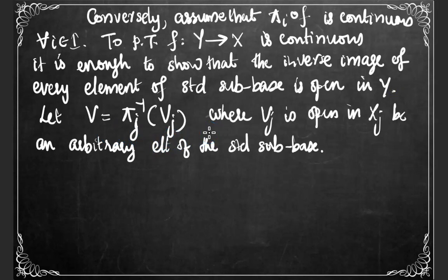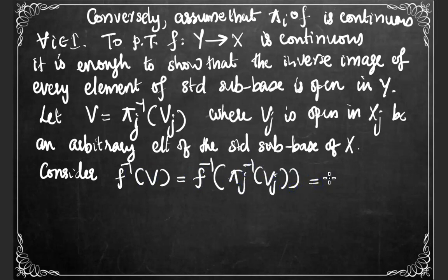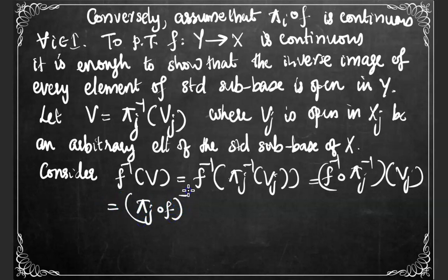Let V equal πⱼ⁻¹(Vⱼ), where Vⱼ is open in the space Xⱼ, be an arbitrary element of the standard sub-base. Consider the inverse image of V under f, which equals f⁻¹(πⱼ⁻¹(Vⱼ)), and that equals f⁻¹ of πⱼ⁻¹(Vⱼ), which can be expressed as (πⱼ∘f)⁻¹(Vⱼ).